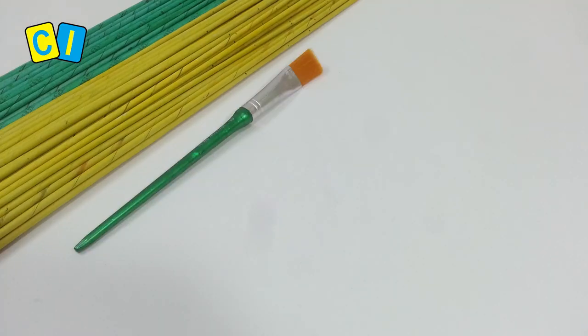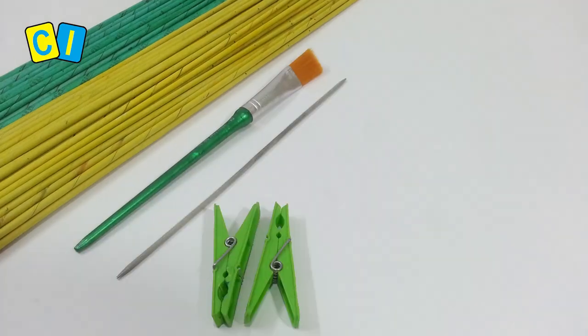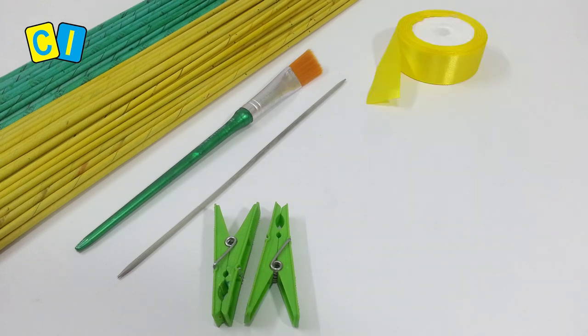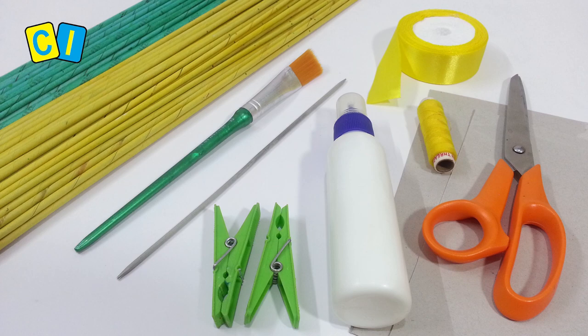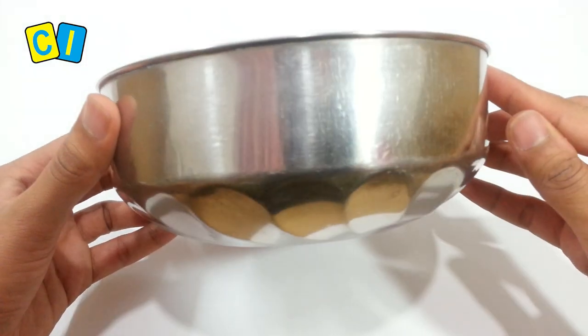To make this basket you need paper tubes, paint brush, a knitting needle, pins, ribbon, thin cardboard, loop, thread, scissors and a container to give shape.